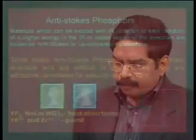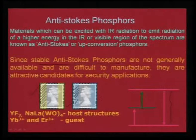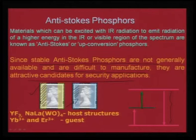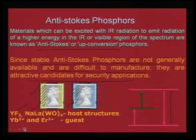This is called up-conversion phosphorescence. Since stable anti-Stokes phosphors are not generally available and are difficult to manufacture, they are attractive candidates for security applications. Examples include yttrium fluoride and sodium lanthanum tungstate — very critical to prepare, so people who want to counterfeit cannot easily make them. These are controlled emission chemicals also called anti-Stokes phosphors, involving two or three photon absorption and emitting a single photon of visible light.